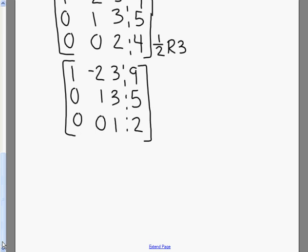Okay, now since we have our 1's going down in diagonal, 0's below them, I want to get 0's above that last 1. So I'm going to do negative 3 row 3 plus row 2. That's going to get rid of that 3. And while I'm adding, I'm also going to get rid of the 3 above that. And I'm going to do negative 3 row 3 plus row 1.